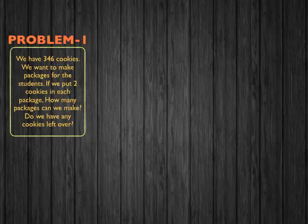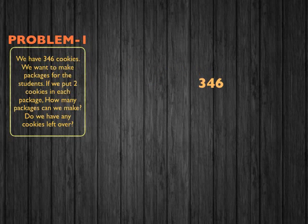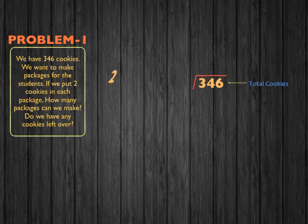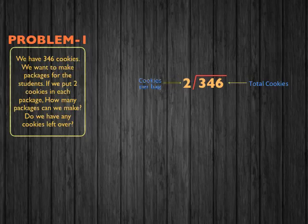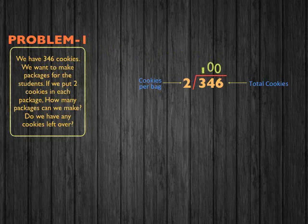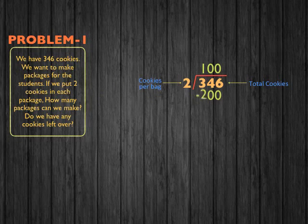In order to begin, we know that we have 346 cookies in total, which we divide by two — the number of cookies that can go in each package. How many groups of two can go into 346? Well, 100. Because 100 times 2 equals 200. So 346 minus 200 equals 146.